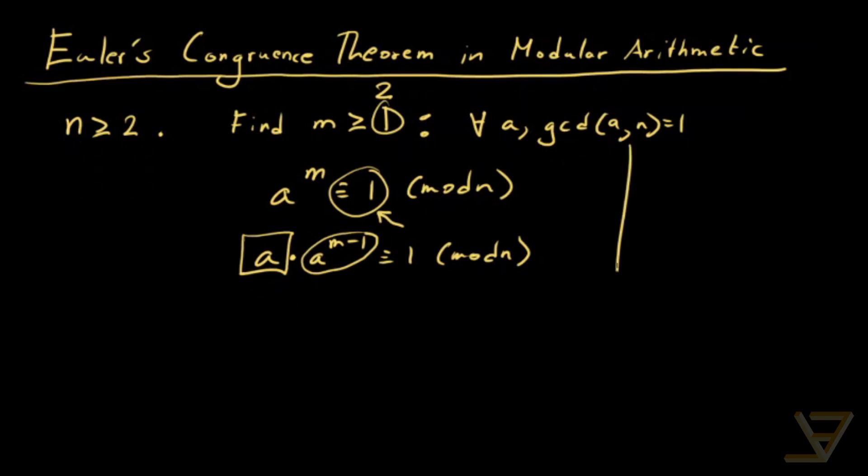Now in terms of why we have this condition gcd of a and n equals 1, it's because this has to be the case for this congruence to be true, because this means a to the power of m minus n k for some integer k equals 1.